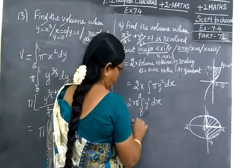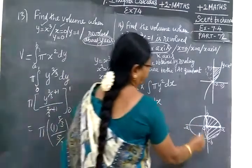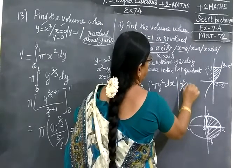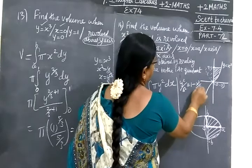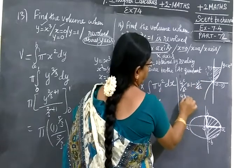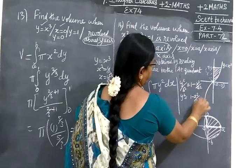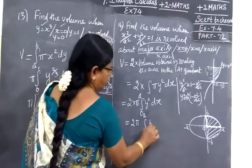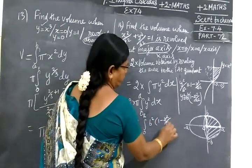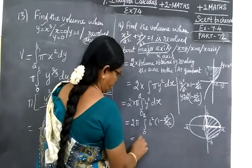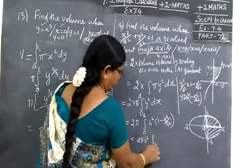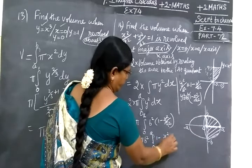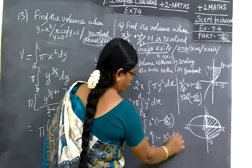For y², we have to simplify. Here it is given: y²/b² = 1 - x²/a². Multiply both sides by b²: y² = b²(1 - x²/a²). Now substitute b²(1 - x²/a²). Taking b² outside: 2πb² ∫(1 - x²/a²) dx from 0 to A.